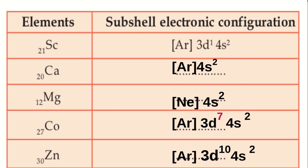In magnesium, atomic number 12, subshell electronic configuration: [Ne] 3S2. In cobalt, atomic number 27, subshell electronic configuration: [Ar] 3D7, 4S2.